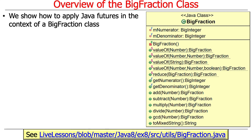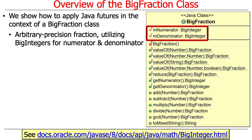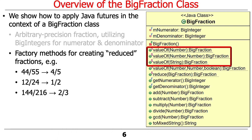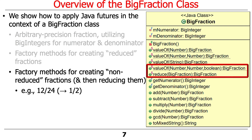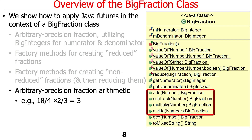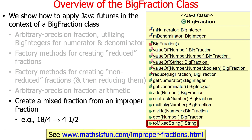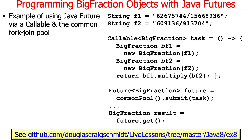We're going to use this in the context of our BigFraction class, which we talked about before when discussing the fork join pool. It's basically an arbitrary precision fraction that uses BigIntegers for the numerator and denominator, which can grow to arbitrarily large numbers. There are factory methods that create reduced fractions in their simplest form, and you can also create non-reduced fractions and reduce them later in a background thread since reduction can take a while.